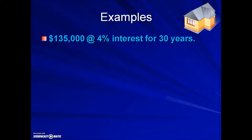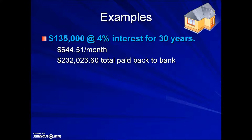Suppose you're a person taking out a loan of $135,000 at 4% interest for 30 years. Monthly payments are $644.51. If you do some analyzing, you find that after 360 payments, you've paid over $232,000.